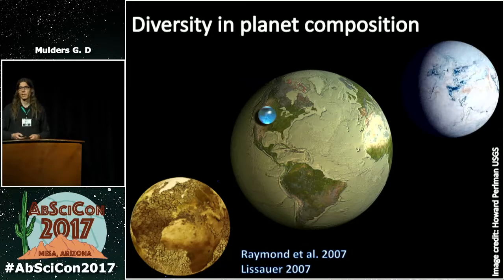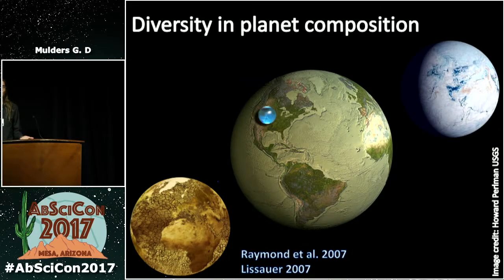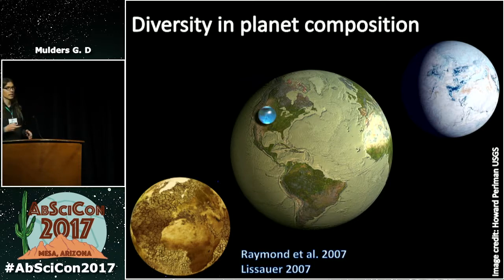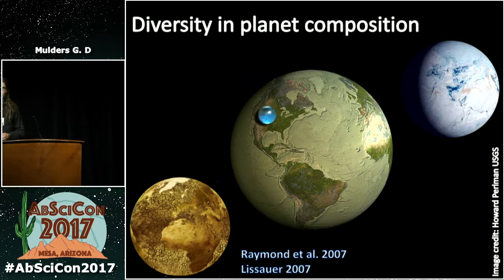This is also a possibility that may form. With all these new exoplanets we've discovered, there might be a large diversity in the composition of planets that we can observe. We see there is a large diversity in exoplanetary systems, and there might also be a diversity in the composition of planets that we observe.